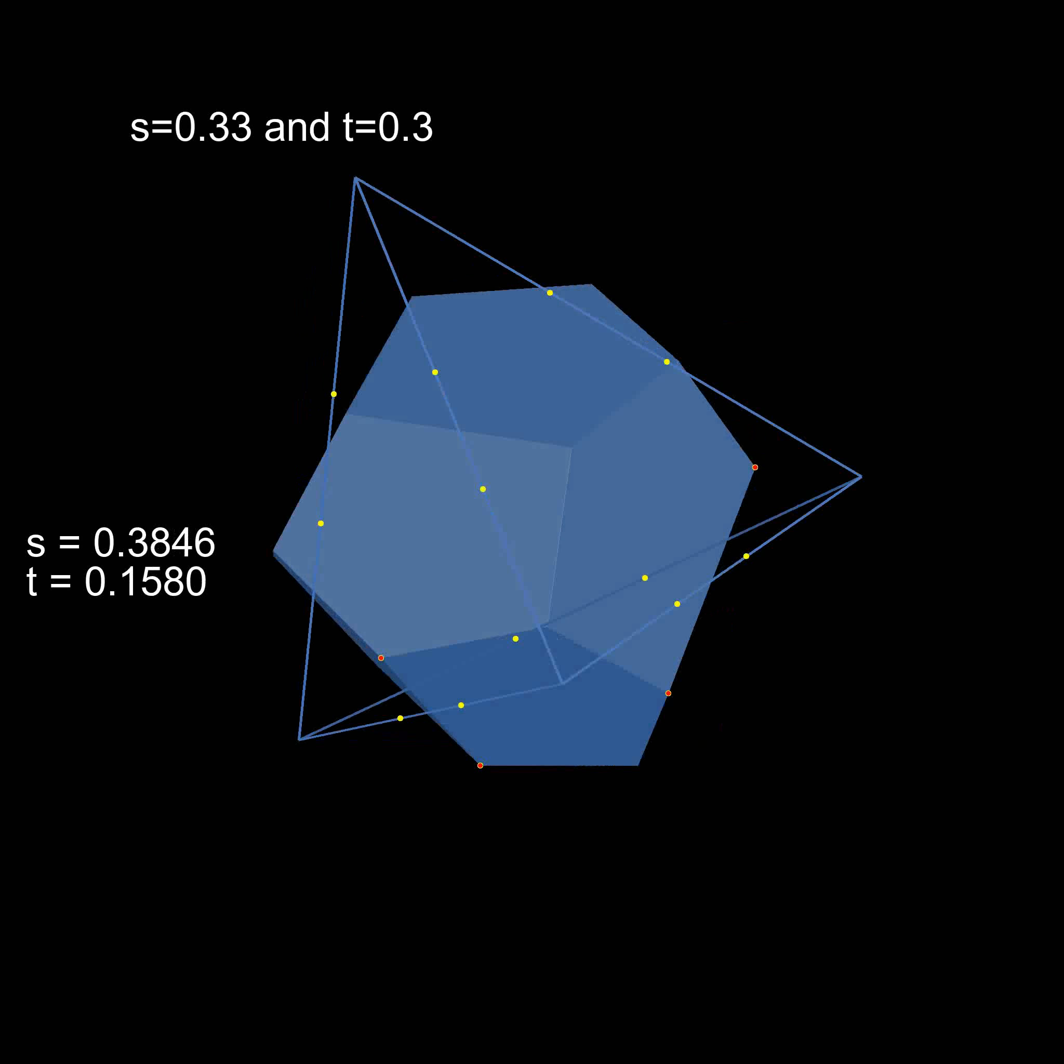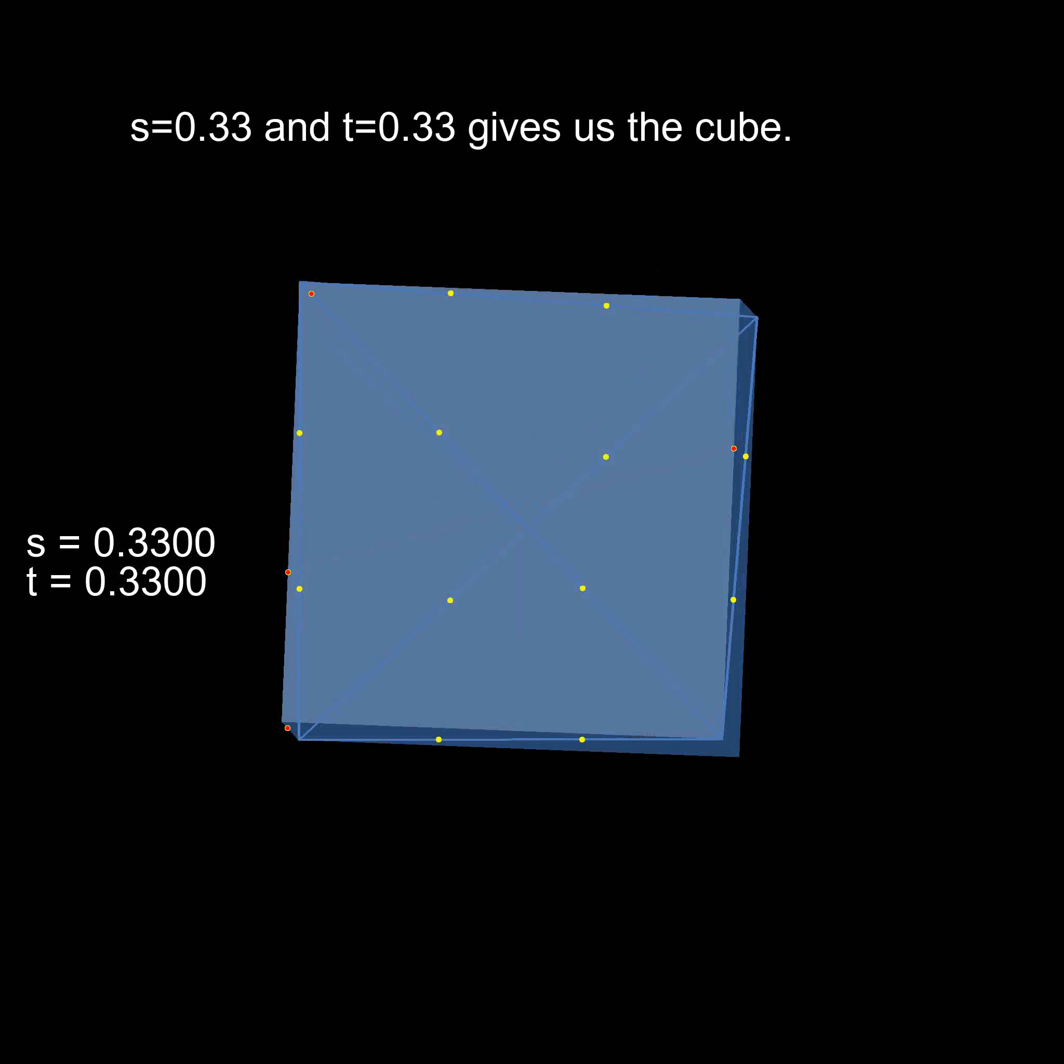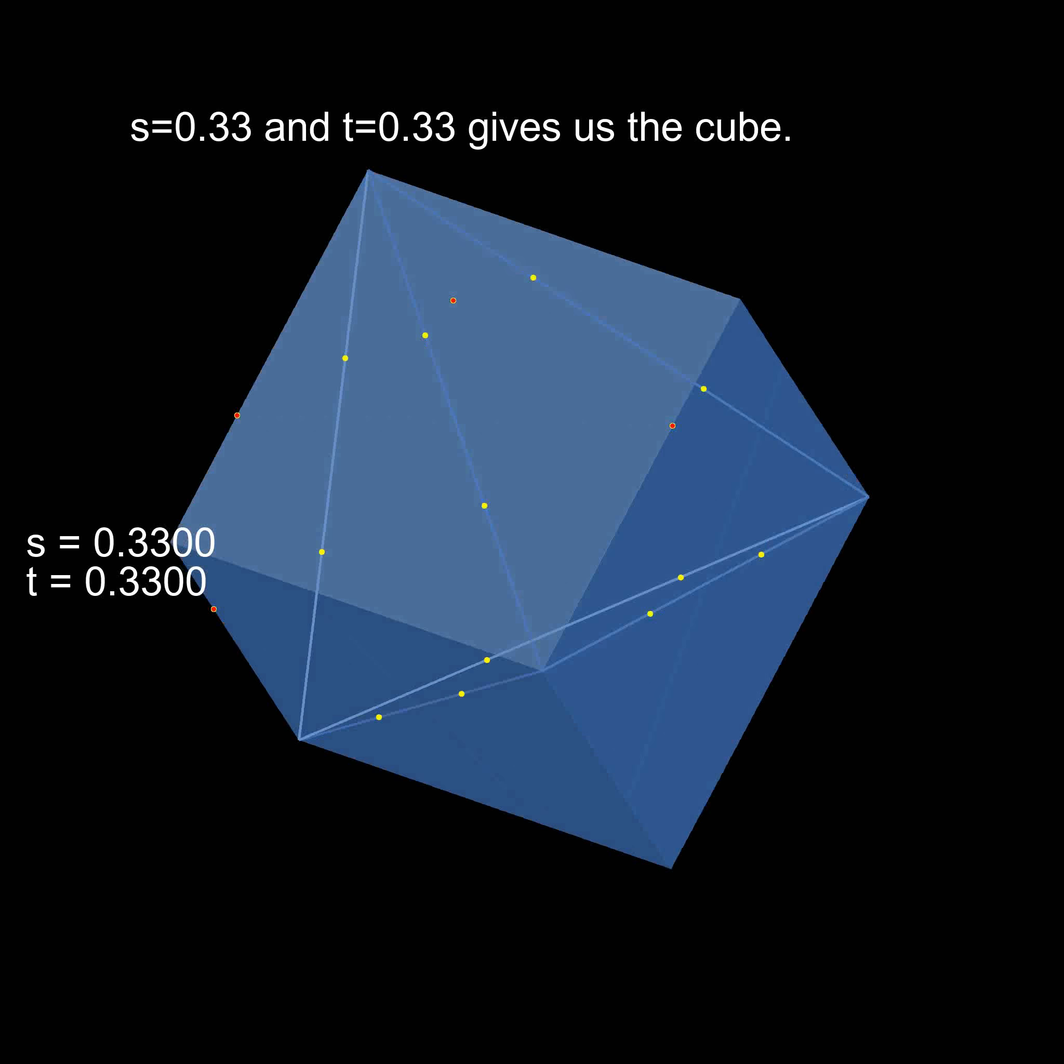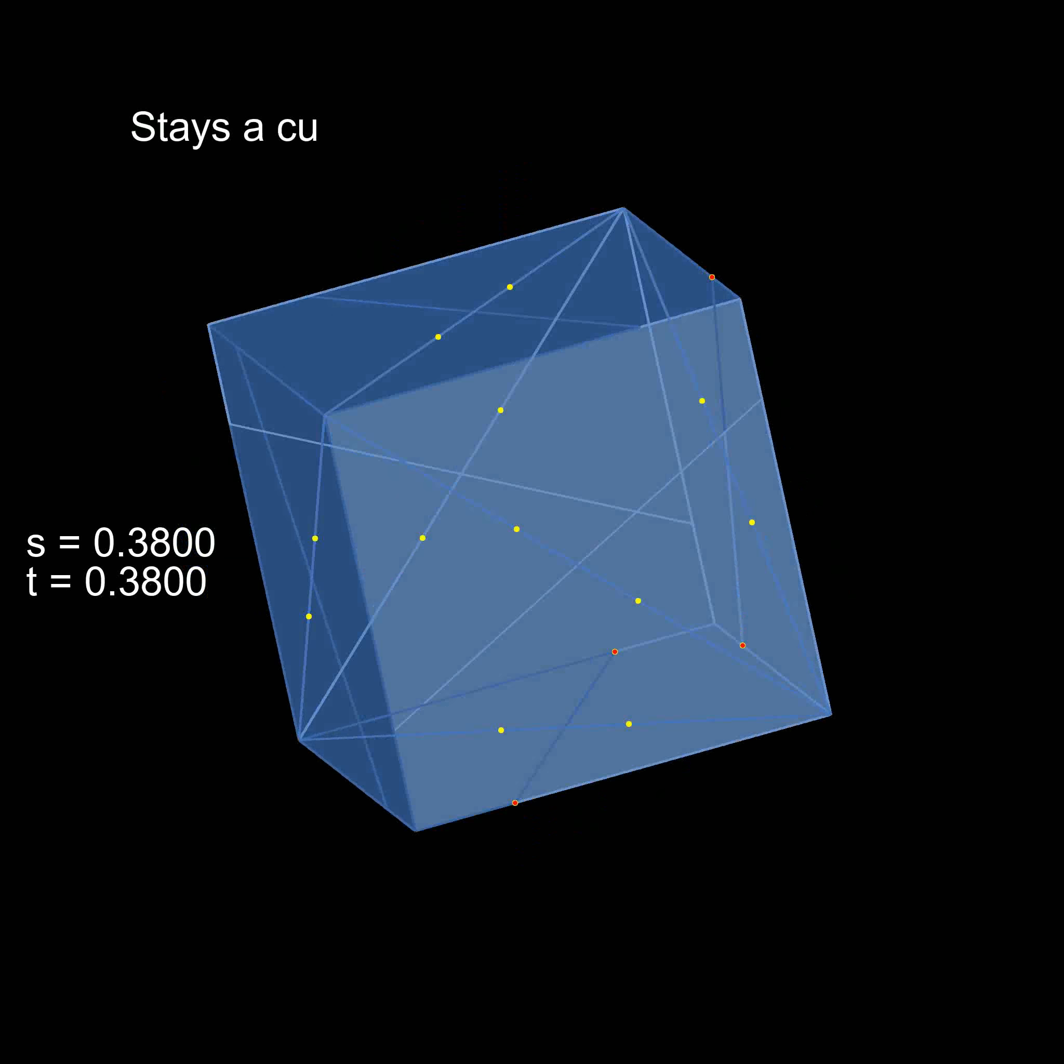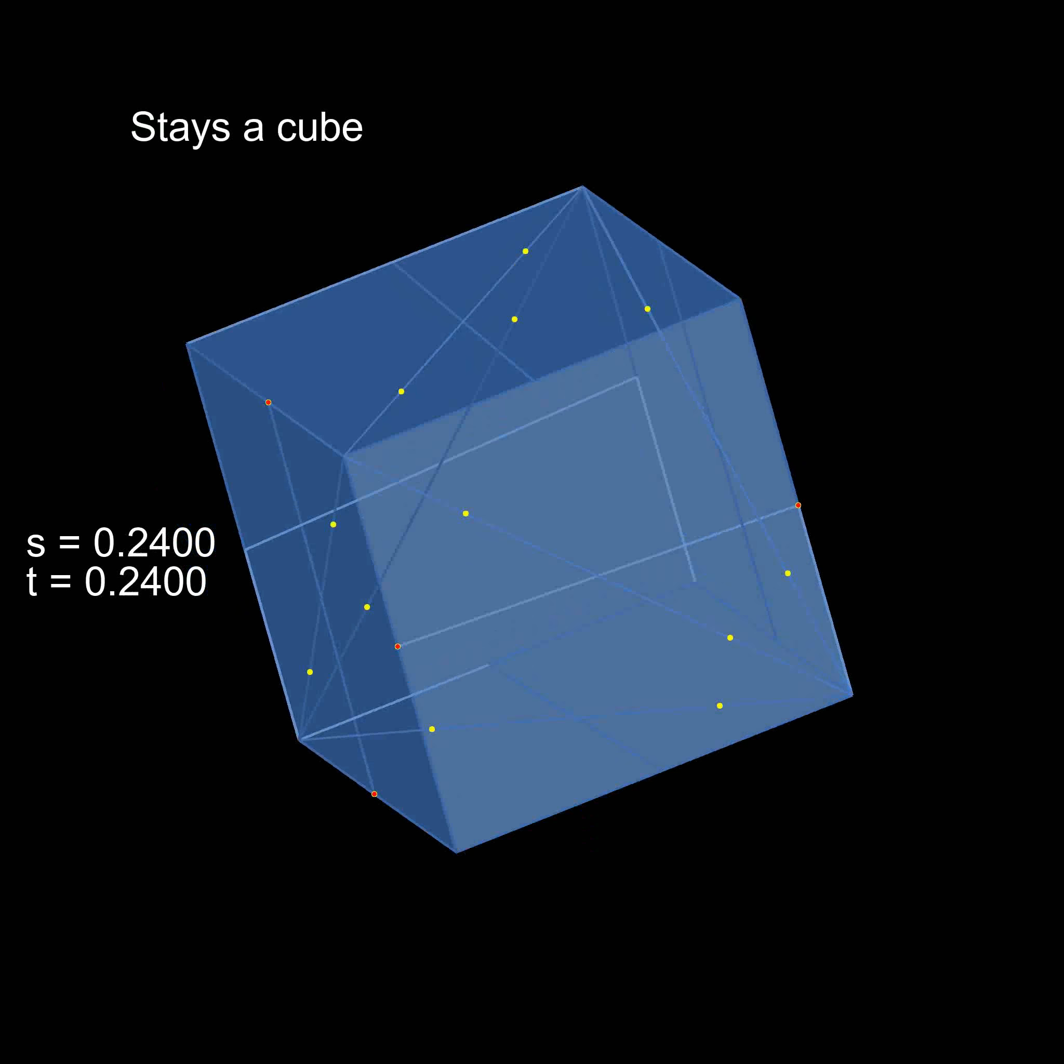But when s and t are same, something surprising happens. We get a cube. We can see here that it stays a cube. As s and t change, the yellow and red points move around.